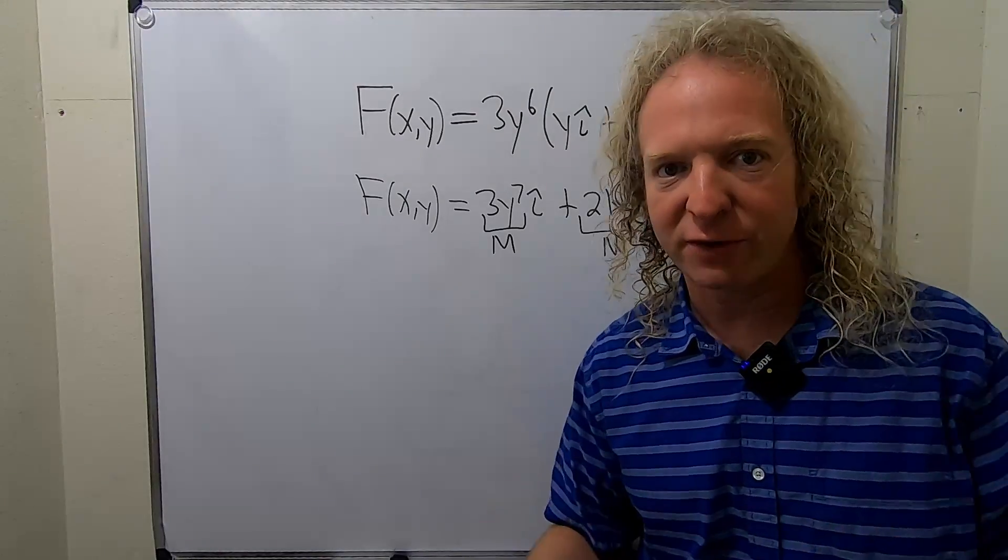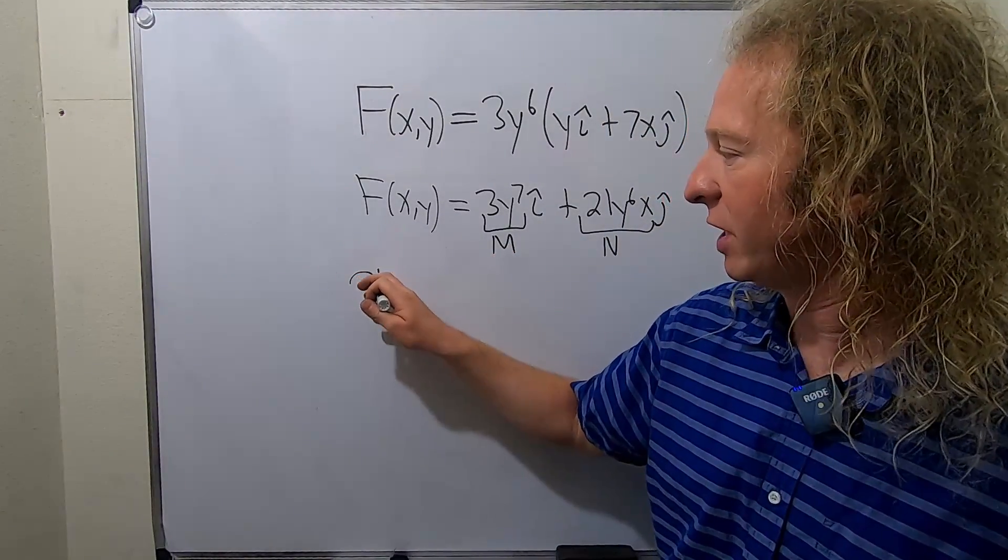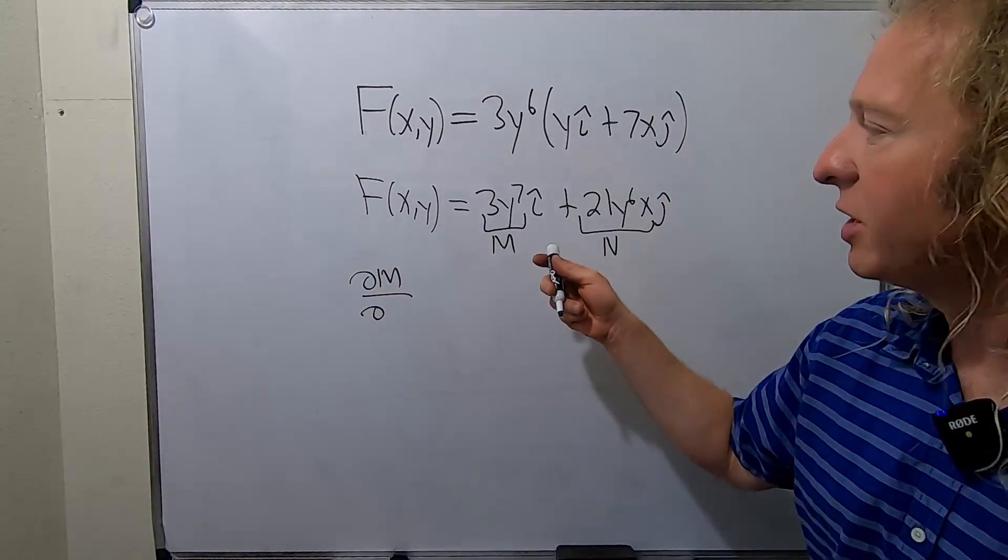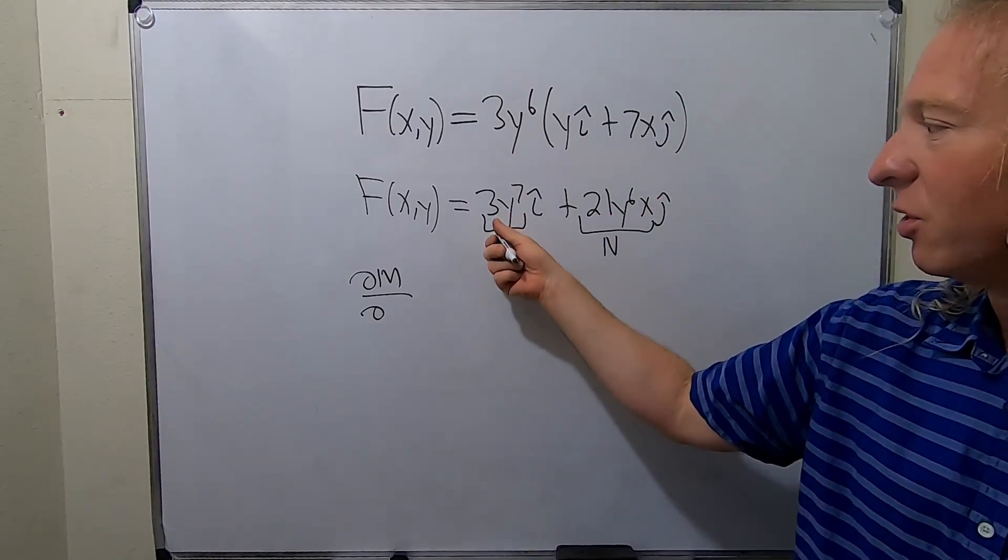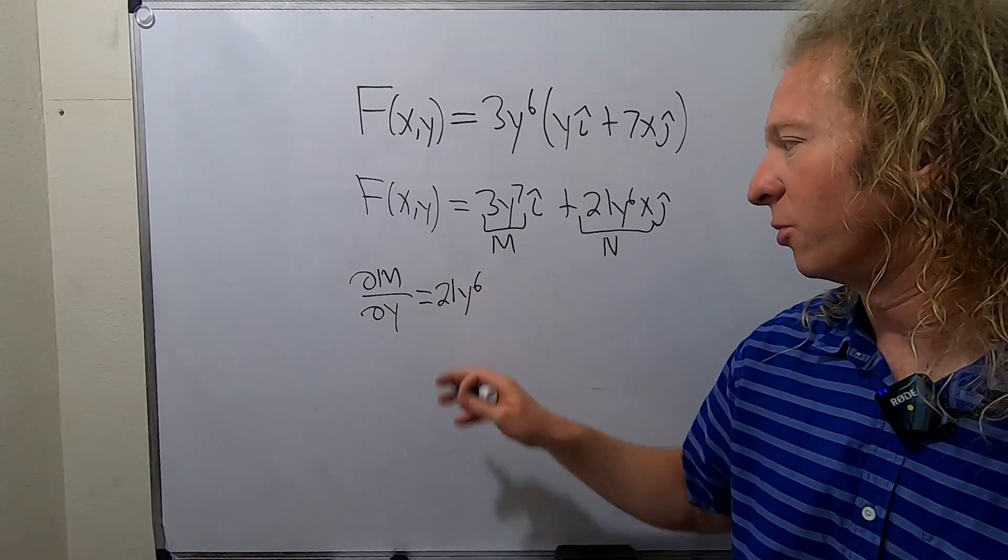And so the test for a conservative vector field basically says you take the partial derivative of this with respect to—the way I do it is, this is like your first component, or your x component, so you do the other variable. So that'll be 21y^6 using the power rule.